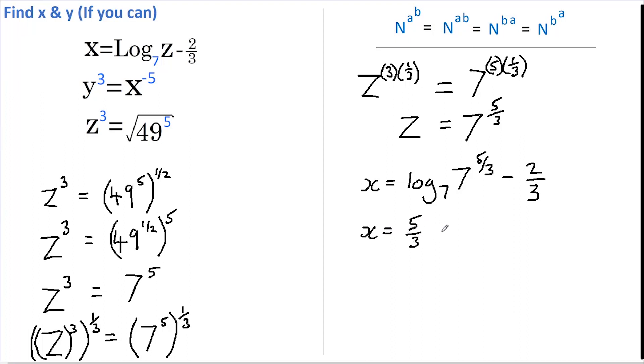Which equals 1. So that all worked out really nicely. Now for the last part, let's find Y. Y to the third equals X to the minus 5.